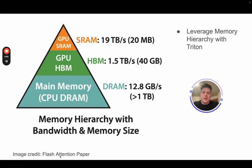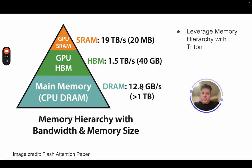This image is from the FlashAttention paper and calls out the so-called memory hierarchy, which is what you're able to leverage with Triton. Going from top to bottom: we have SRAM — that on-chip shared memory inside each streaming multiprocessor — very fast at 19 terabytes per second, but very small at only 20 megabytes total. Moving down the pyramid, GPU HBM global memory operates at 1.5 terabytes per second with 40 or 80 gigabytes depending on your card. And then CPU memory, which might be over a terabyte, operates at only 12.8 gigabytes per second.